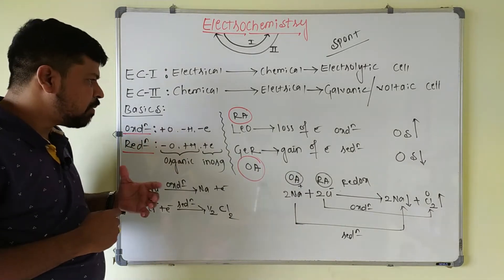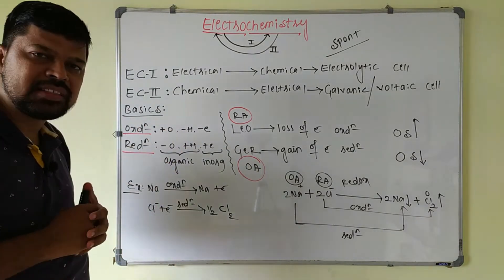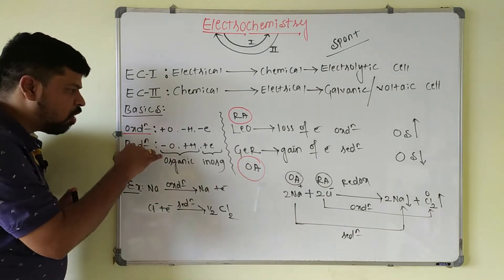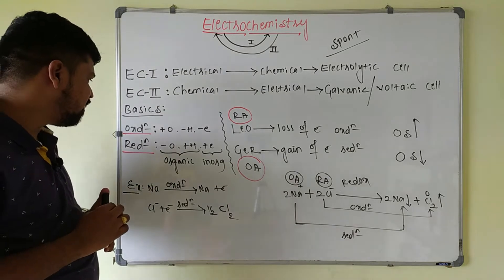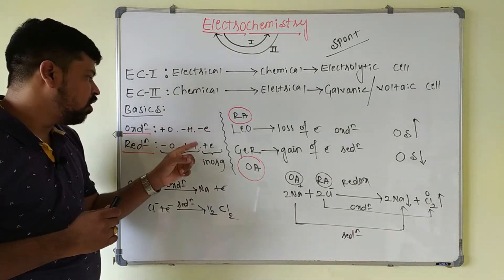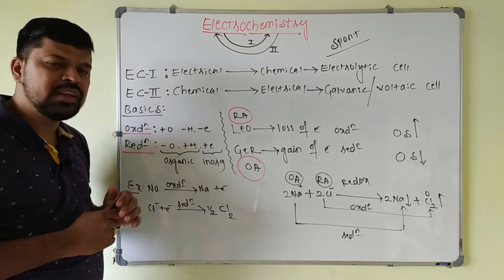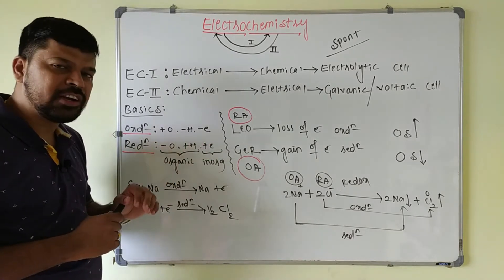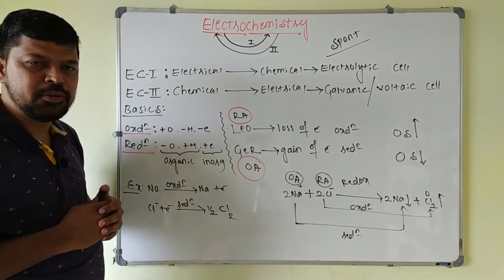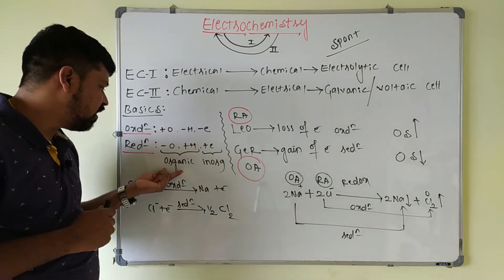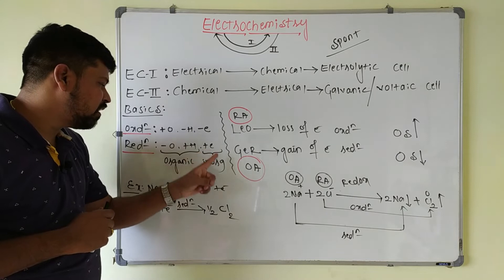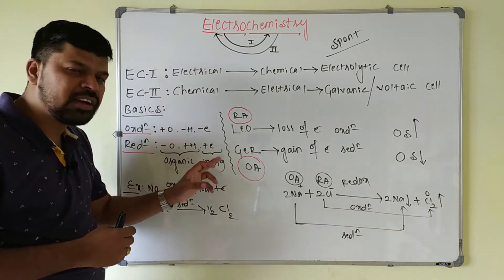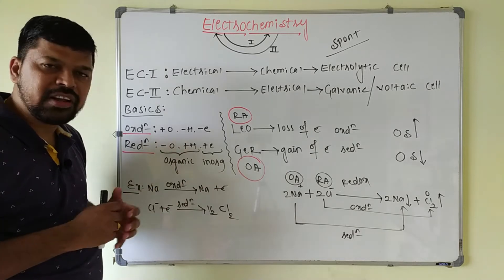What is an oxidizing and reducing agent? Oxidation can be defined in three ways: addition of oxygen, removal of hydrogen, and removal of electrons. Reduction is removal of oxygen, addition of hydrogen, and addition of electrons — exactly opposite to oxidation. These definitions are used in organic chemistry, while in inorganic chemistry we use loss of electrons and gain of electrons.